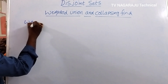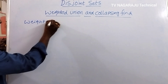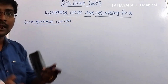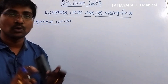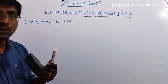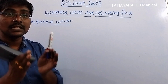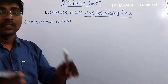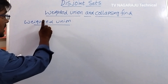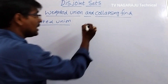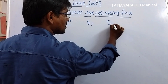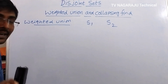The first topic is weighted union. What do we mean by union? Combining a set of elements together — that is union. Weighted union means the union operation is based on some weights. That means which tree is to be connected to which tree is decided based on some weight. Assume S1 is one set and S2 is another set — S1 and S2 are two disjoint sets.